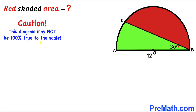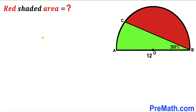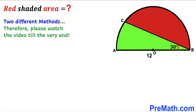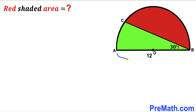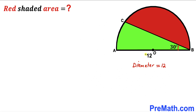Please keep in mind that this figure may not be 100% true to scale. In this video I am going to share two different approaches, so please watch till the very end. We know that the diameter AB is 12 units, so the radius r is half of the diameter, which is 6 units.